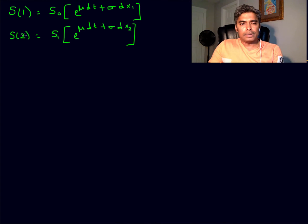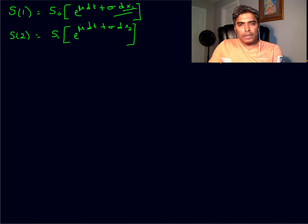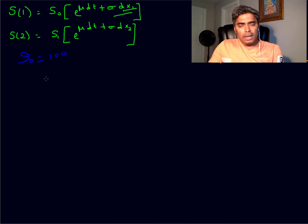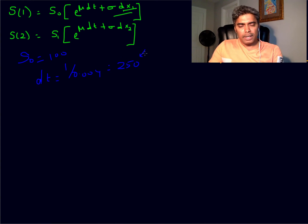I'm going to take S1, which is the return of the investment after the first duration. In this example I'm going to take a very small duration — this is the return of the investment during the day of the S&P index. The initial investment is going to be one hundred dollars. The dt will be 0.004, which means we will have 250 trading iterations within the given day.